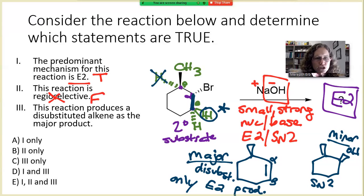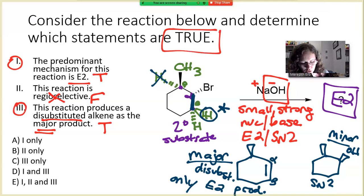Statement three: This reaction produces a disubstituted alkene as the major product. That one we found out was also true. So one and three are true statements. We check back at the question: consider the reaction below and determine which statements are true. So always double check that. One and three are true statements, and so our answer is going to be D.